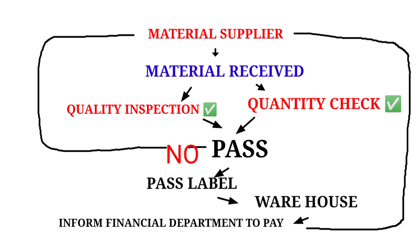In the incoming quality control process, raw materials are supplied by the supplier and received by the industry. After receiving the materials, the industry inspects them for both quality and quantity — checking whether the proper quantity was sent and whether the material meets quality standards.